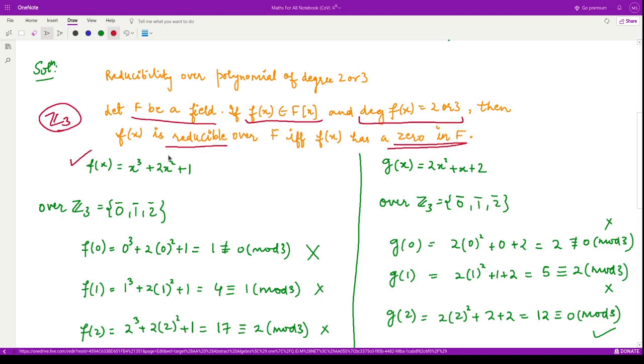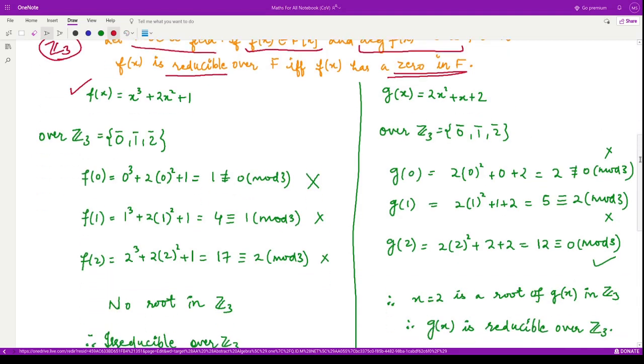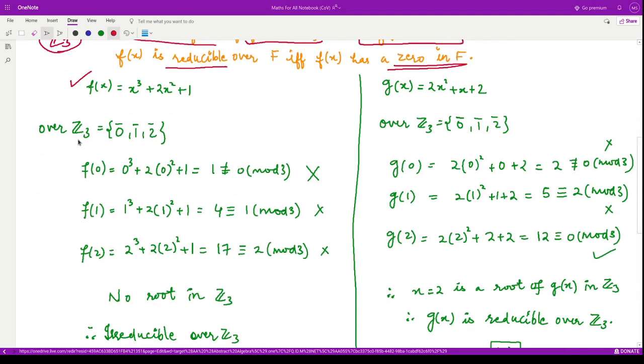So, for example, for this polynomial f(x), Z₃ contains only 0, 1 and 2. That means the remainders which are obtained when you divide any integer by 3. So, the only remainders are 0, 1 and 2. So, the root must be from this field only. So, the only possibility for a root is 0, 1 or 2.